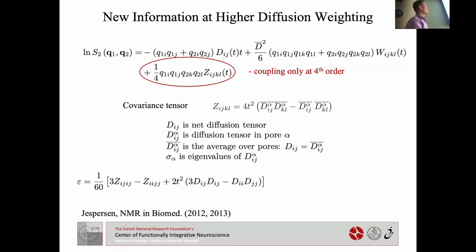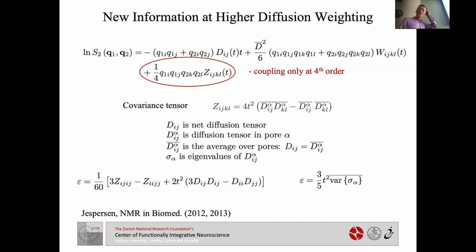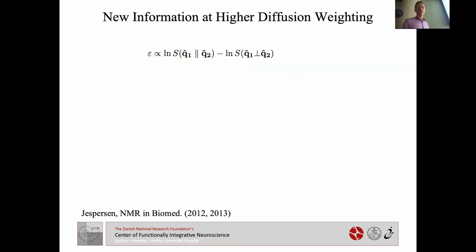In the long diffusion time limit, the C tensor becomes the covariance tensor of local diffusion tensors. For each domain (pore, cell) α we have a local diffusion tensor D^α; averaging over all pores gives the net diffusion tensor. The eccentricity index from Corey's work turns out to be exactly the variance of diffusion tensor eigenvalues — the numerator of fractional anisotropy, but now for the individual domains rather than the overall tensor.